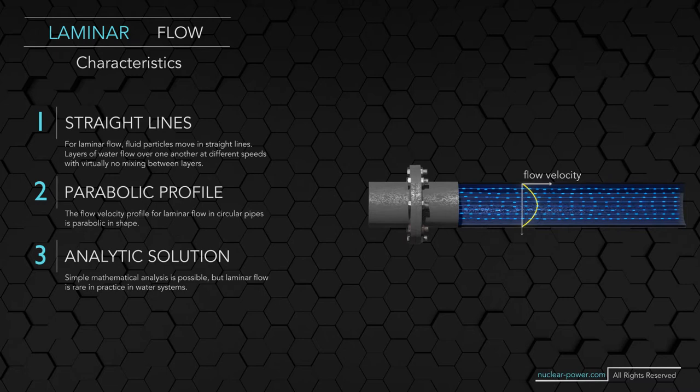Therefore laminar flow is also referred to as streamlined or viscous flow. Due to viscous effects, the flow velocity profile for laminar flow in circular pipes is parabolic in shape. Laminar flow is not common in industrial processes because it's common only in cases where the flow channel is relatively small, the fluid is moving slowly, and its viscosity is relatively high.